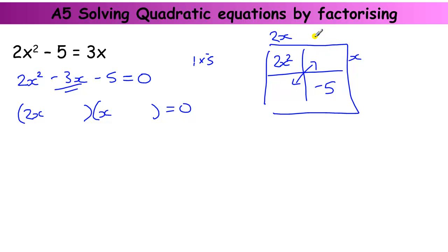So if I put the minus 1 here and minus 5 there, I end up with 1x, which is x, and minus 10x. Okay, that does not combine to give us minus 3. So that's no good. So let's try something else.